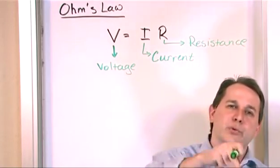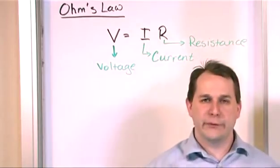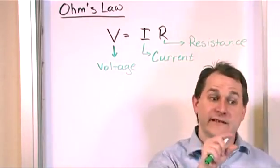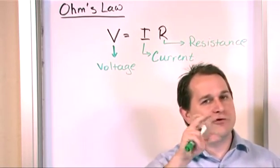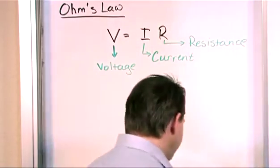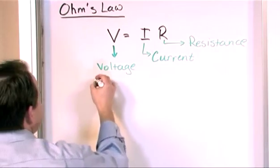So the current is going to be going through those resistances. So whatever the current is that's flowing through a resistor, multiplied times the resistance value itself in ohms, is going to tell you what the voltage drop, what the voltage is across that resistor. So I think let's talk about it in a little more detail and you'll see it with some pictures as well.